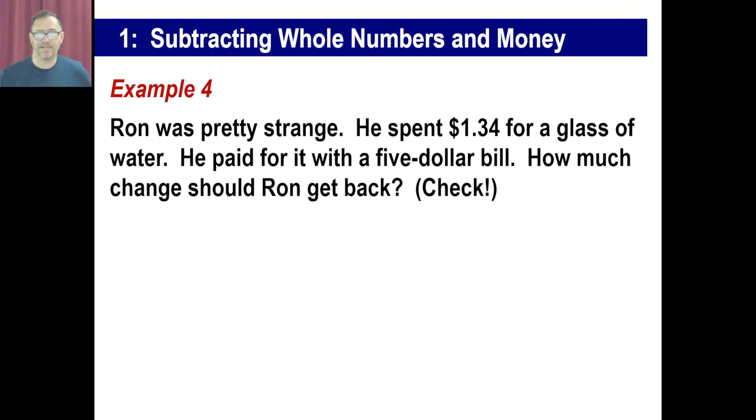Okay? Let's try another one. Ron was pretty strange. He spent $1.34 for a glass of water. He paid for it with a $5 bill. How much change should Ron get back? And we'll check it. Okay. Well, really quickly, you can either do this. We'll go, oh, 5.00 minus 1.34. But if you don't like messing with the decimal at this stage, you don't have to worry about it. Just put 5, 0, 0, and 1, 3, 4. And you're going to subtract. So, we're going to look at this and go, okay, well, you can't take 4 from 0. I'm going to borrow from the, oh, wait, there's nothing there. Okay, I'm going to borrow from this. So, I'm just going to make that 4. Okay? Which will make this 1 there. That'll be a 10. Okay?